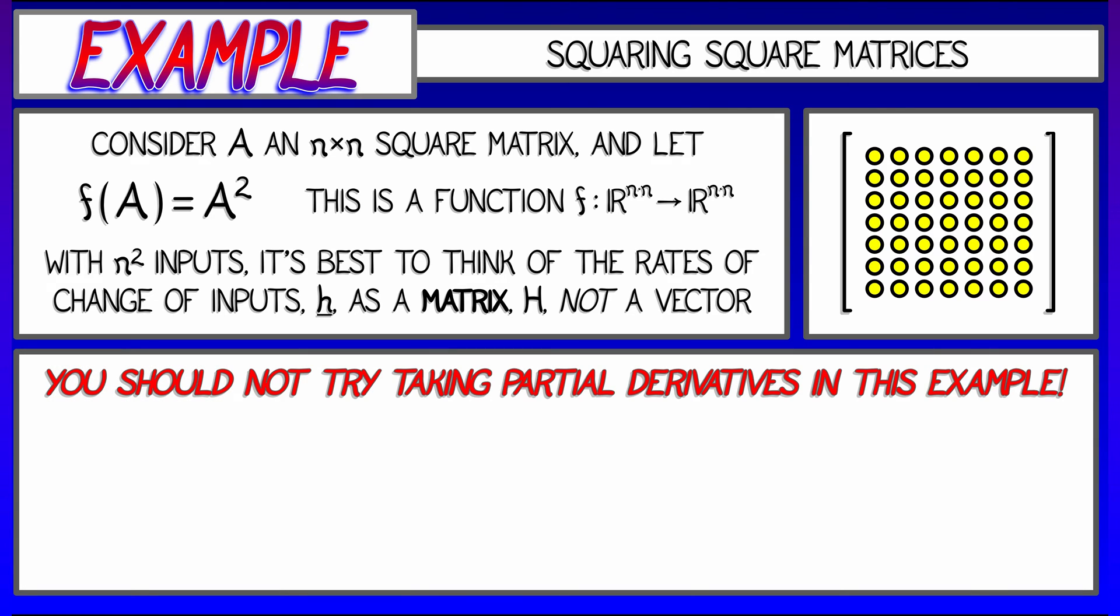Now, in this case, to compute the derivative, taking partial derivatives is the end of the world, right? I mean, try it in a 2x2 example, writing out explicit components for everything A11, A12. Oh gosh, what a mess. And now, for a 10x10 example, forget about it.